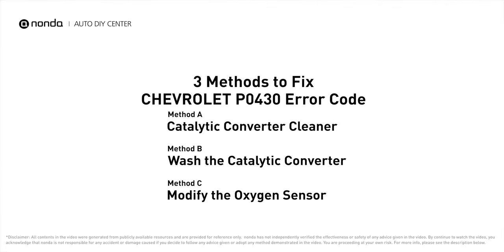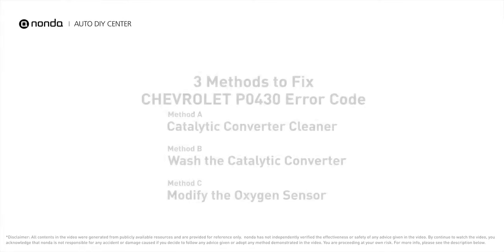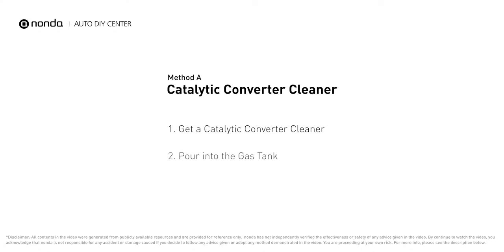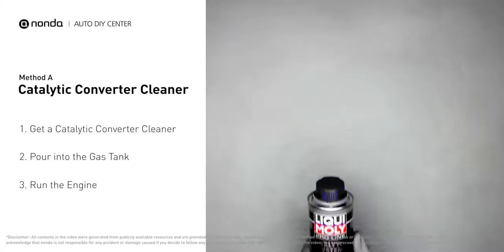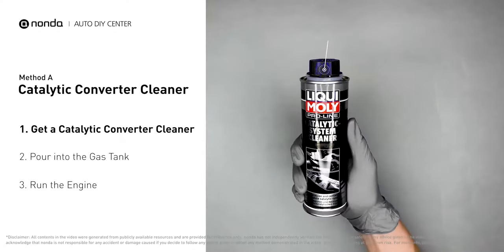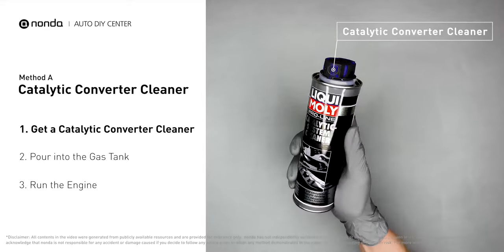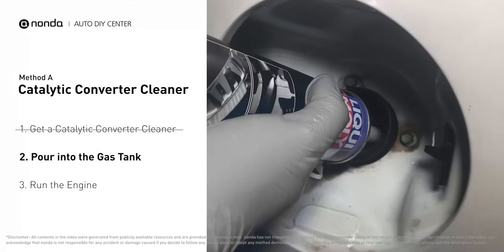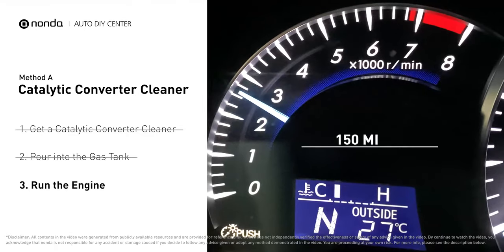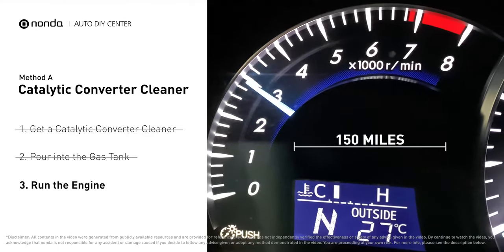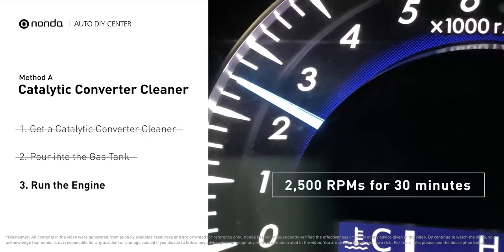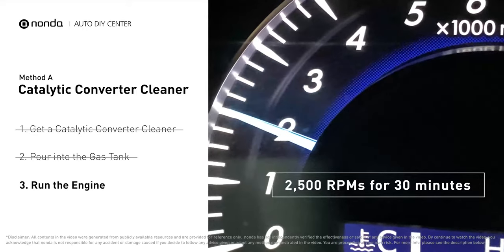Here are three of the most practical solutions to fix Chevrolet's P0430 error code. Method A: use a catalytic converter cleaner. There are many different kinds of converter cleaner, normally all under $20. Simply pour the cleaner into the gas tank, then drive your car for 150 miles or run the engine at about 2500 RPM for 30 minutes to run the cleaner through.